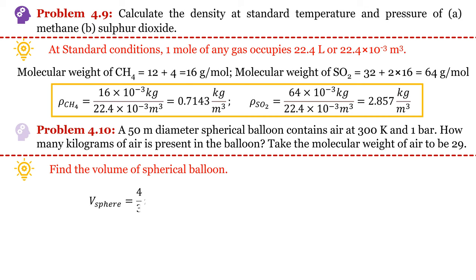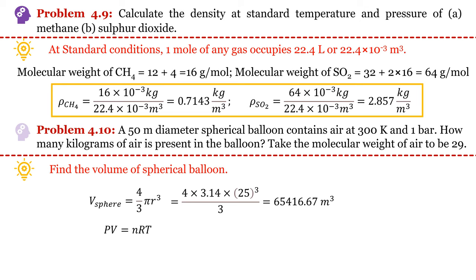We can write volume of sphere equal to 4/3 π r³. Diameter is given, so radius will become half of diameter. We can easily estimate the volume of the sphere, and depending on the unit of radius the unit of volume will be meter cube. Now we can use the ideal gas equation — pressure, volume, and temperature are known — to estimate the number of moles.